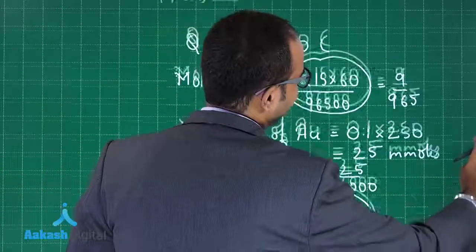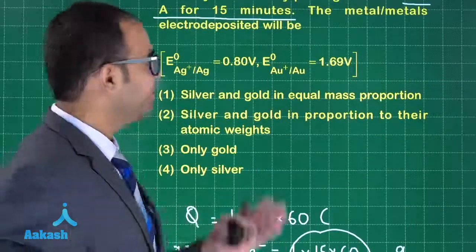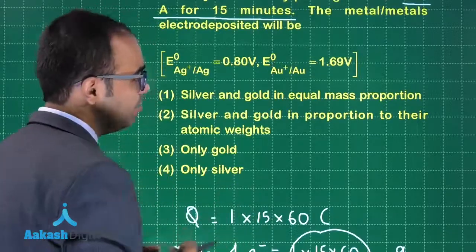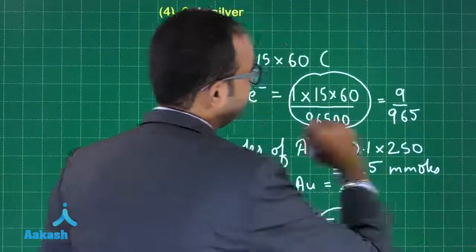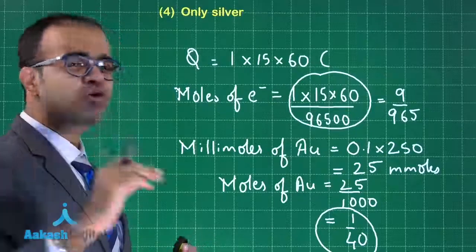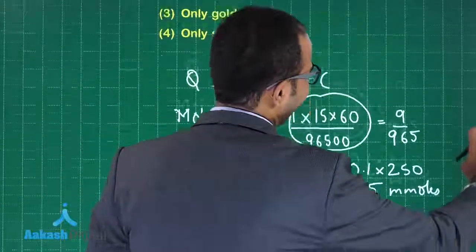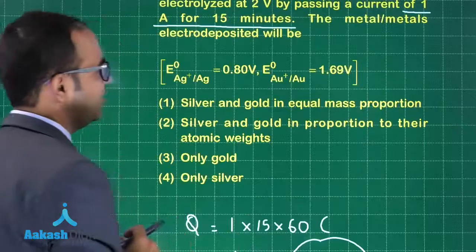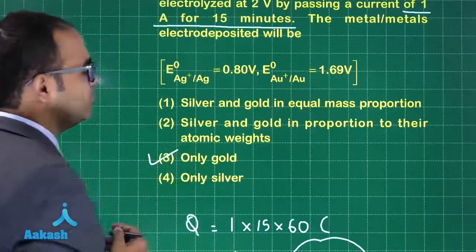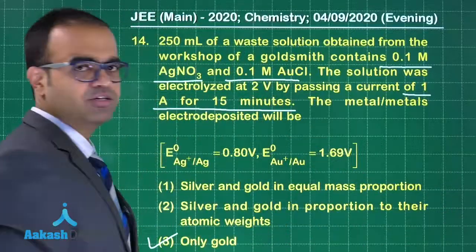If we look at the electrode potential, Au has a higher electrode potential as compared to Ag. That's why Au will be deposited. If I have moles of Au less than the moles of electrons, then only Au will be deposited guys. A moderate level question, we just had to calculate the moles of electrons and moles of Au. Answer is option 3.